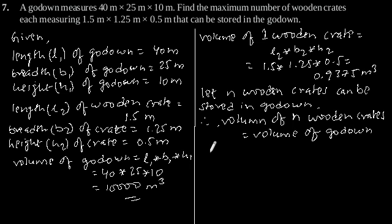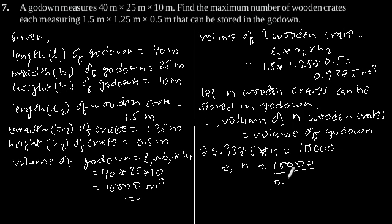So this implies 0.9375 × n is equal to 10,000, which gives n is equal to 10,000 divided by 0.9375, which is equal to 10,666.66.